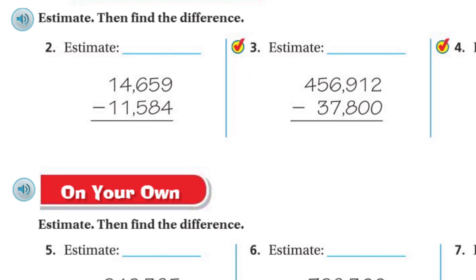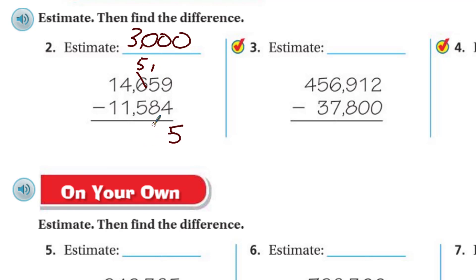This is the last little section — estimate, then find the difference. If I'm going to estimate, I see about 15,000 and let's call that 12,000. So 15 minus 12 is 3,000. My estimate is going to be 3,000. Let's see if I'm close. We start with the ones first. 5 minus 8 — can't do it, so I borrow 1. Now I have 15 minus 8, which is 7. And 5 minus 5 is 0. Then I have 3. I end up with 3,075, which is pretty close to my estimate.